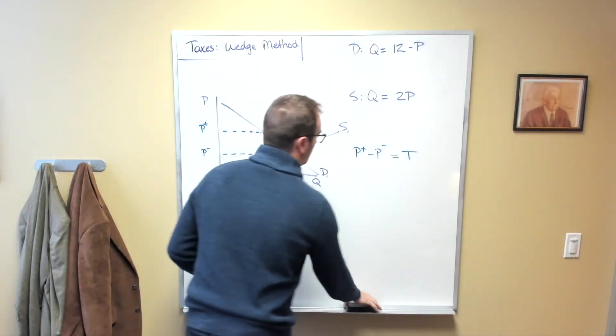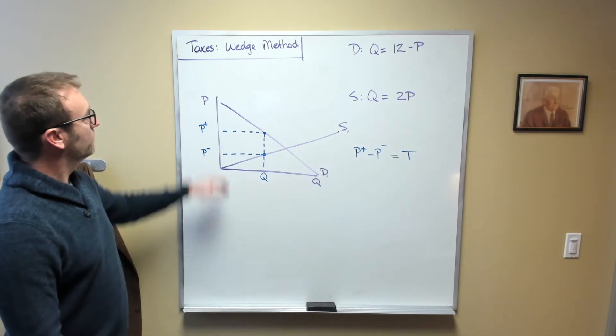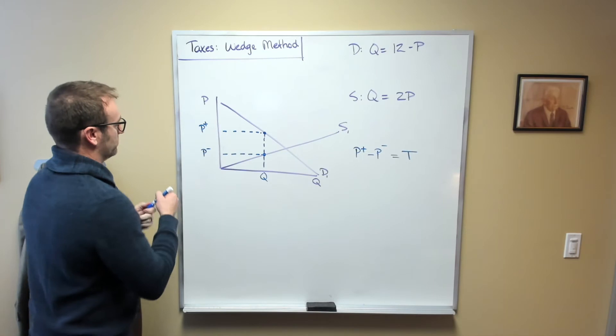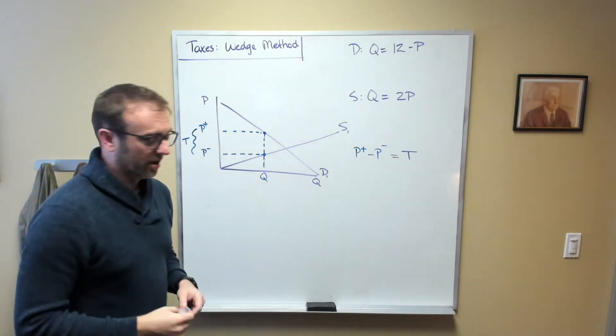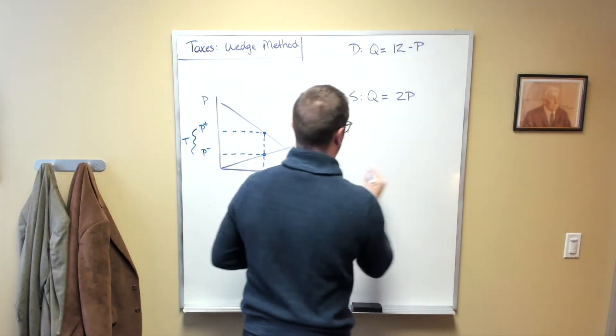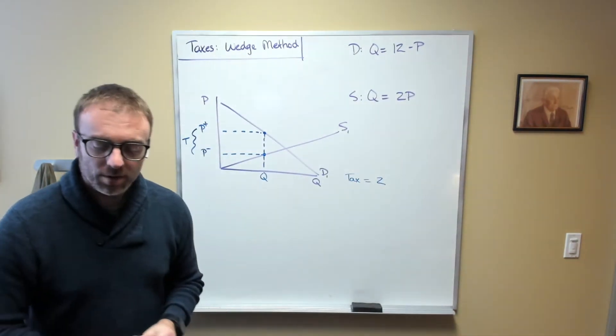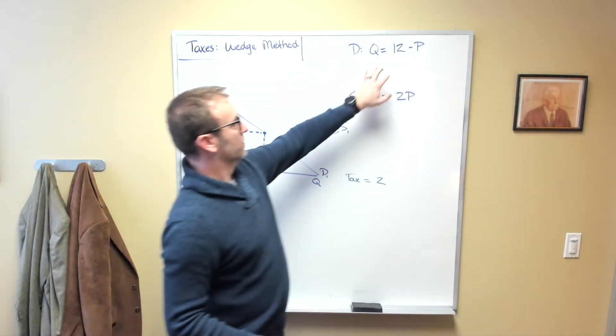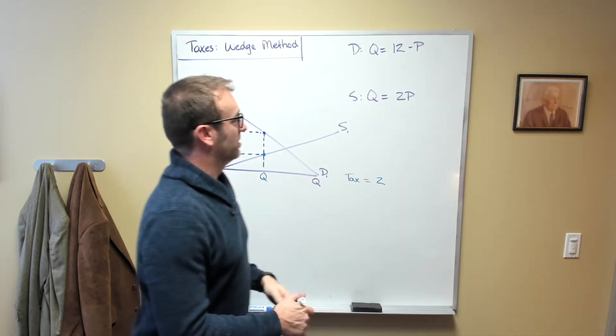So what we can do is solve this problem much faster if we use this wedge method by noting that the difference here is equal to the tax. So this distance here would be the tax. Now in our case, the tax was $2. So we know that the tax is equal to 2. Now what we can do is a really clever trick, but first we have to note that we have to switch this to being in terms of P, and this in terms of P as well.